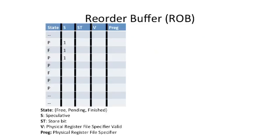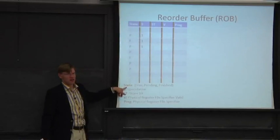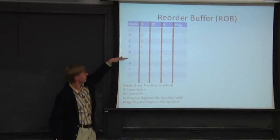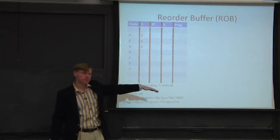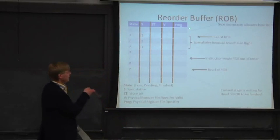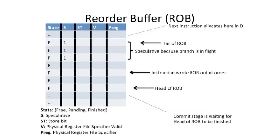Here is a basic reorder buffer — a minimal ROB needed for an out-of-order pipe. It's used to keep track of in-order committing of instructions, though things are put into it out of order. Each entry represents a different in-flight instruction. State values are: dash-dash means free, P means pending, and F means finished. Instructions are stored in order into the ROB and it operates as a circular buffer with head and tail pointers chasing each other.